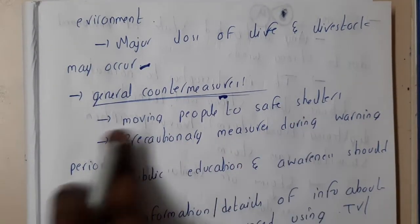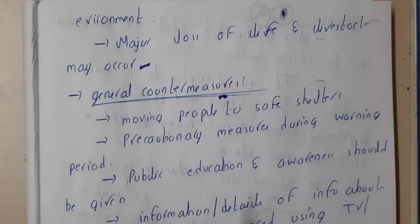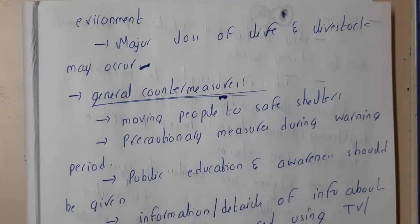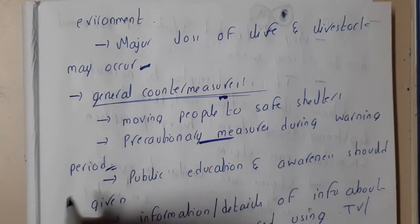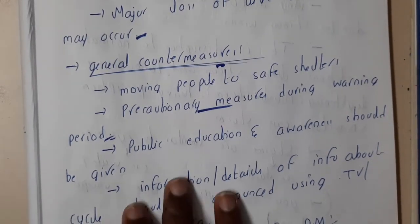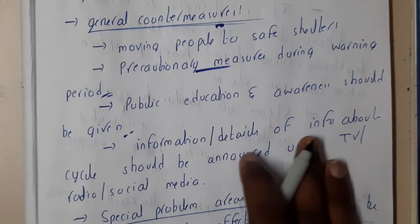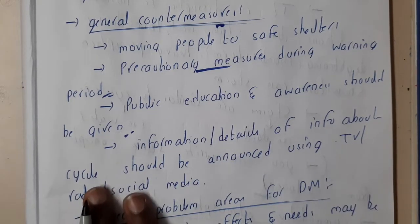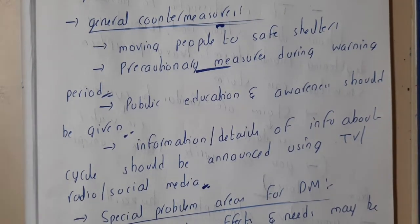For countermeasures: moving people to safe shelters reduces loss of lives and livestock, relocating them to places not vulnerable to cyclones or other disasters. Precautionary measures should be taken during warmer periods when temperatures are high. Public education and awareness should be given, and information about cyclones should be announced on TVs and radios so everyone can take their own measures.